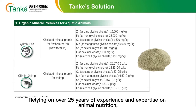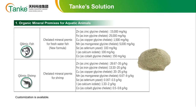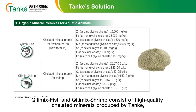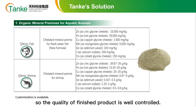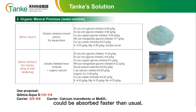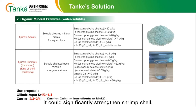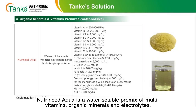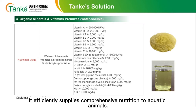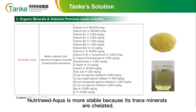Relying on over 25 years of experience and expertise in animal nutrition, Tanki develops different premixes with organic minerals to meet customers' needs. The following products are getting good feedback from the global market. Keylimix Fish and Keylimix Shrimp consist of high-quality chelated minerals produced by Tanki, so the quality of the finished product is well-controlled. Keylimix Aqua S and Keylimix Shrimp S are soluble in water and can be absorbed faster than usual. Keylimix Shrimp S contains chelated minerals and organic calcium, and can significantly strengthen shrimp shell. Neutronid Aqua is a water-soluble premix of multivitamins, organic minerals, and electrolytes, efficiently supplying comprehensive nutrition to aquatic animals. Compared to similar products on the market, Neutronid Aqua is more stable because its trace minerals are chelated.